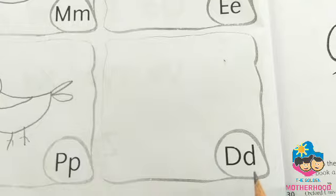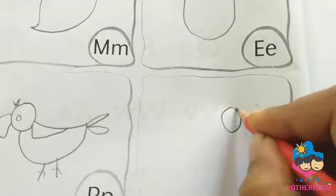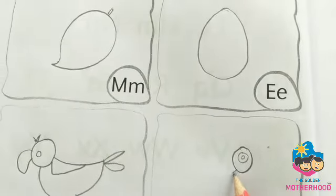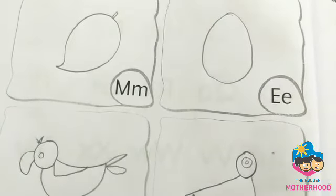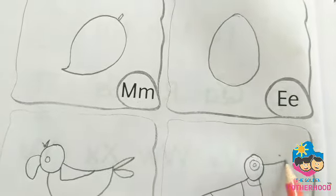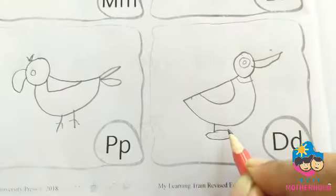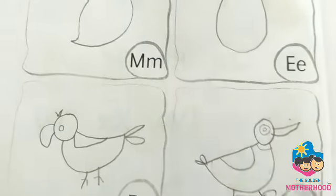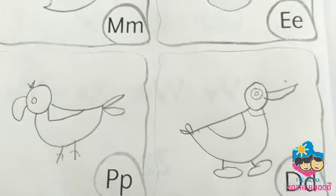This is the letter D and I will draw the picture of a Duck — D for Duck. You can also draw D for Dog, D for Doll, and D for Drum.